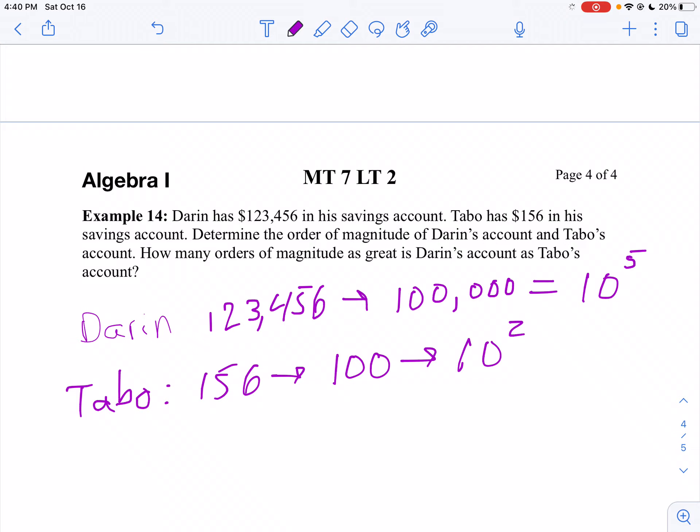Now to find out how many orders of magnitude greater Darren's account is than Tabo's account, I'm going to divide. To find the order of magnitude greater, I'm going to take 10 to the 5th and divide it by 10 to the 2nd. So 10 to the 5th divided by 10 to the 2nd is 10 to the 3rd, so he's three orders of magnitude bigger.